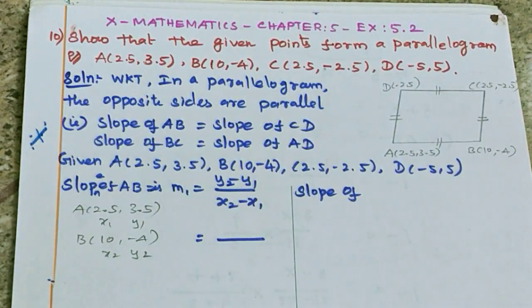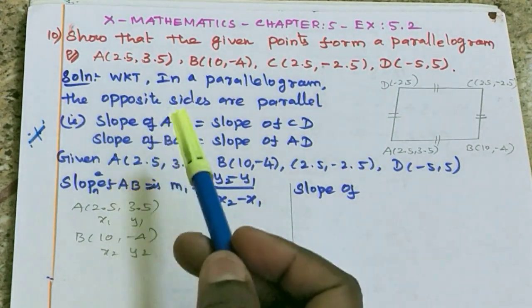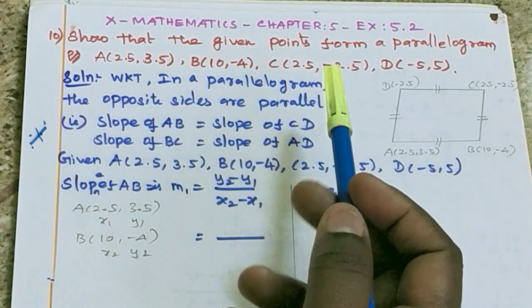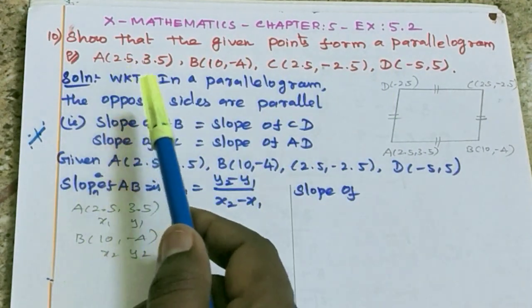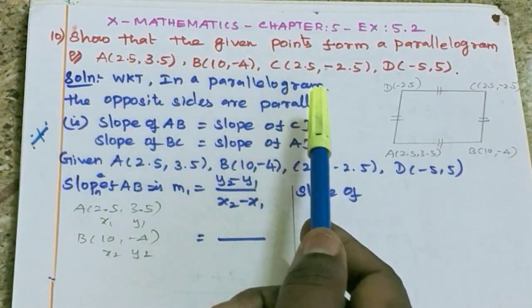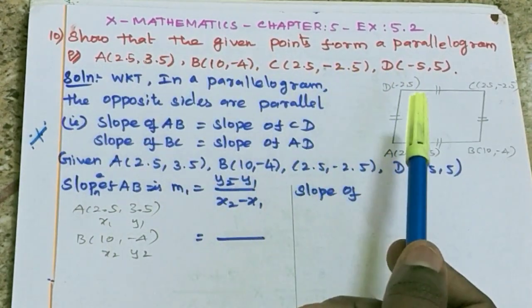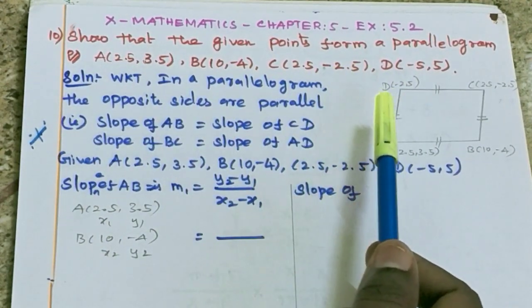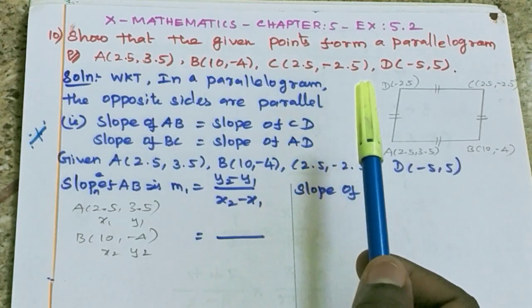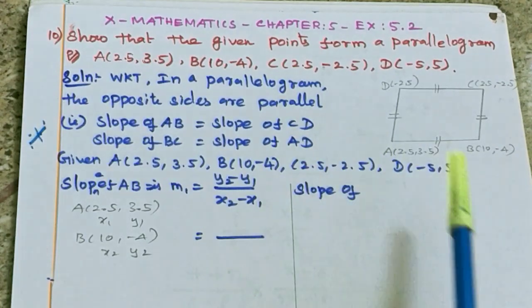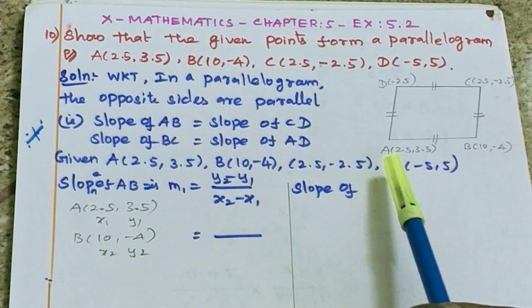So read the question carefully. Show that the given points A, B, C, D form a parallelogram. So 4 points are given and we need to show that these 4 points form a parallelogram. So let's draw a diagram for the parallelogram.